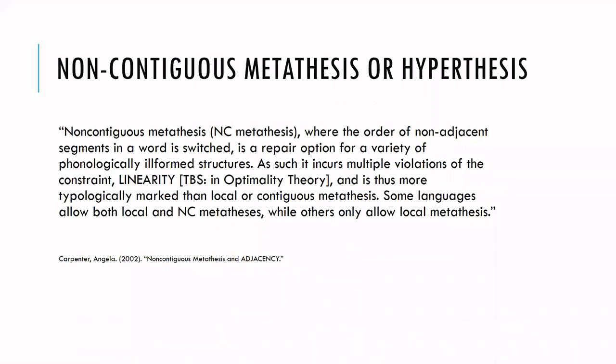The particular type of metathesis at work in Eek is non-contiguous metathesis, or what's called by some hyperthesis. Here's a brief description from Angela Carpenter 2002: non-contiguous metathesis, where the order of non-adjacent segments in a word is switched, is a repair option for a variety of phonologically ill-formed structures. As such, it incurs multiple violations of the constraint linearity — she's writing from an optimality theory perspective — and is thus more typologically marked than local or contiguous metathesis. Some languages allow both local and non-contiguous metathesis, while others only allow local metathesis.